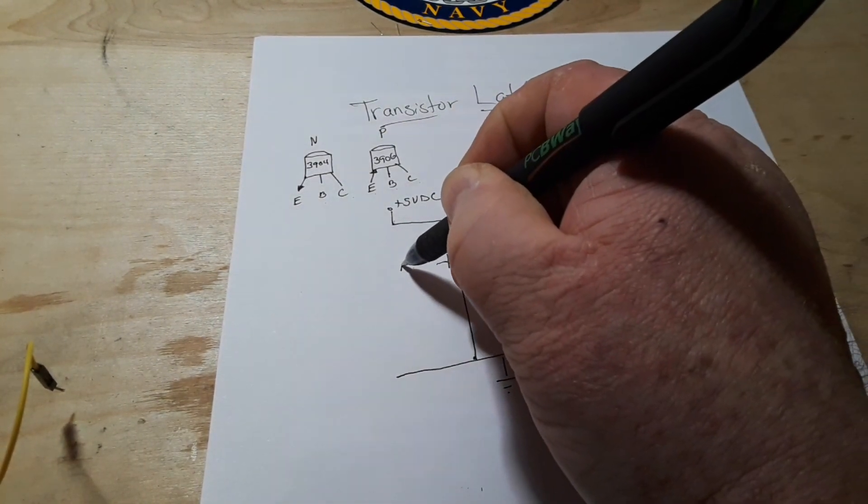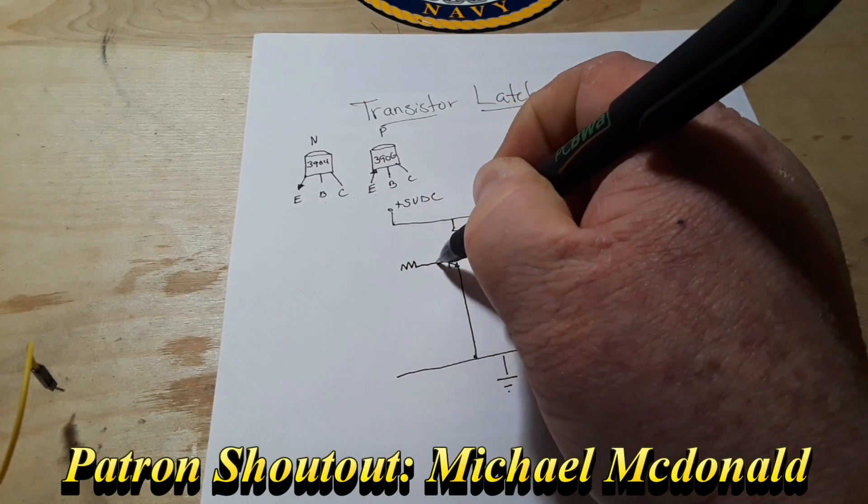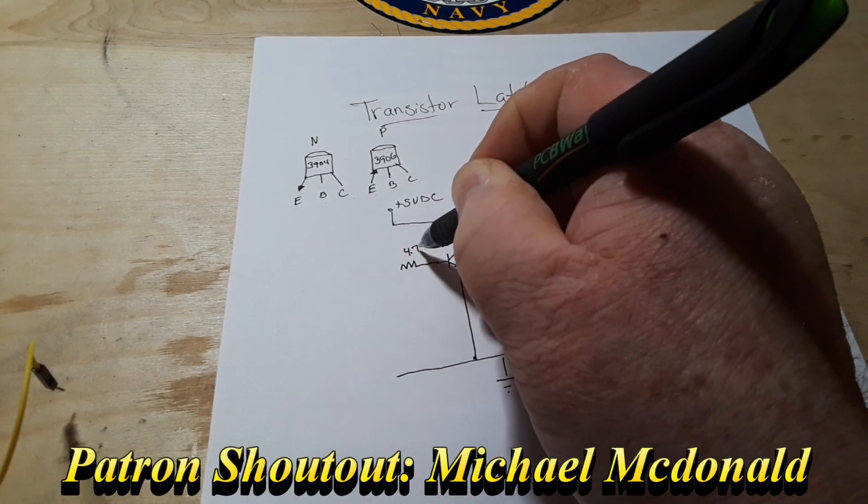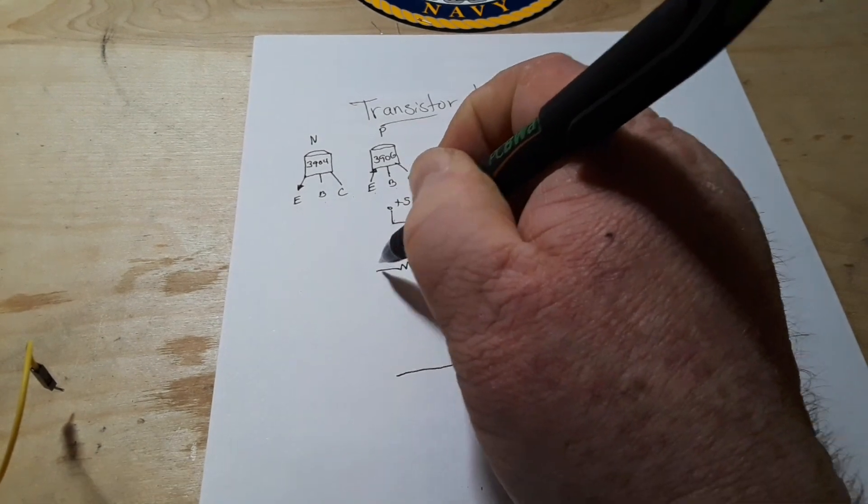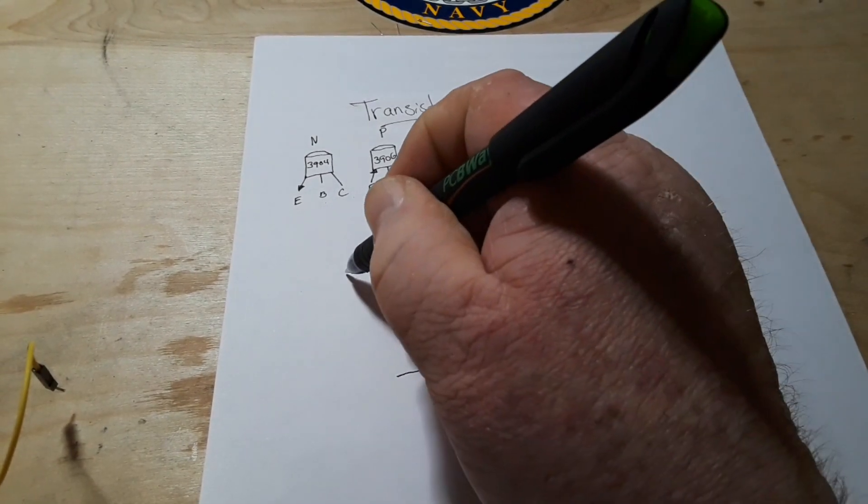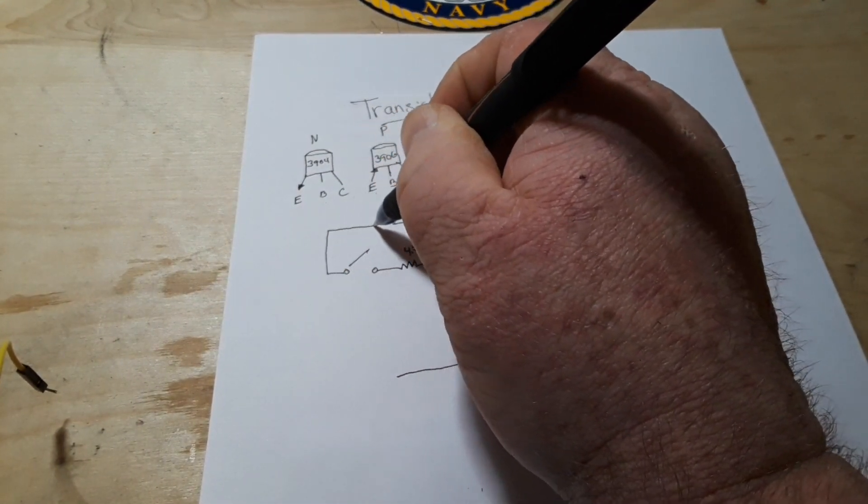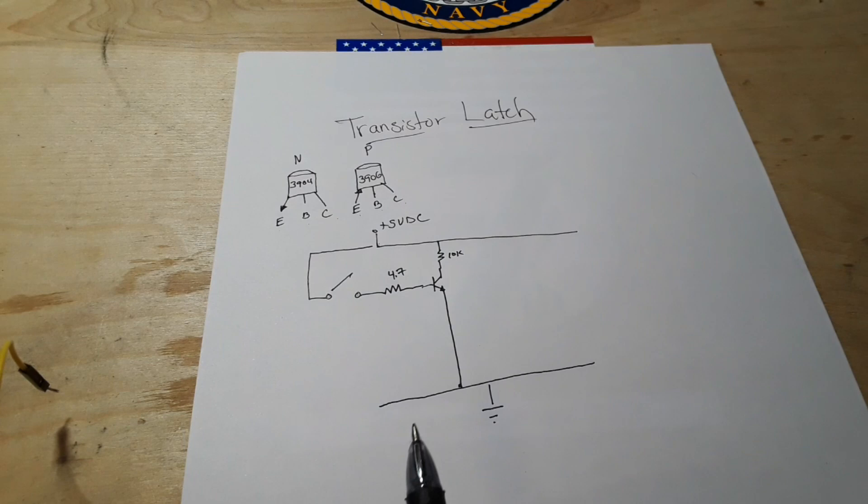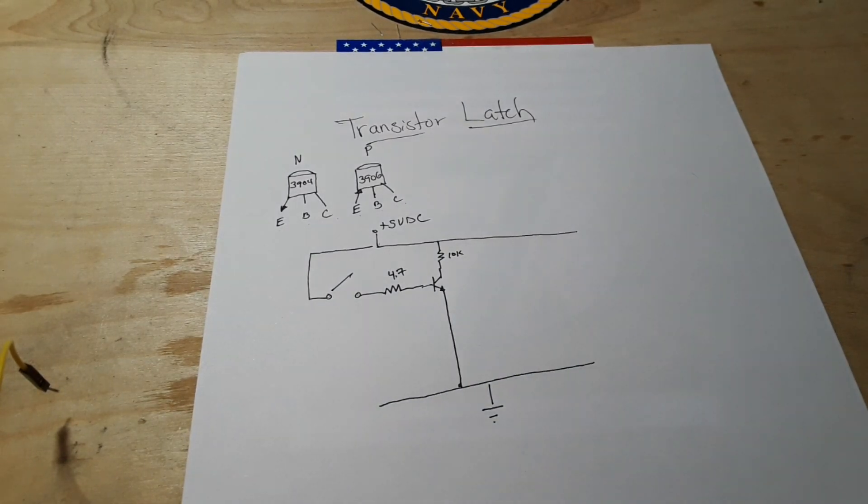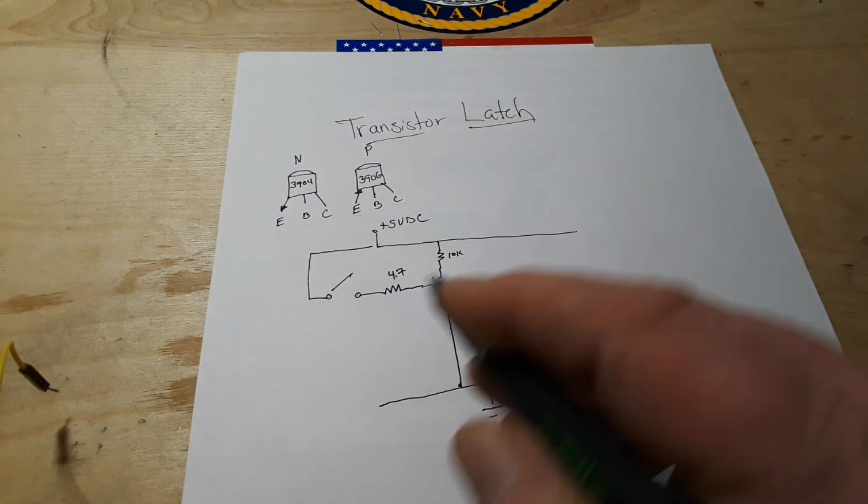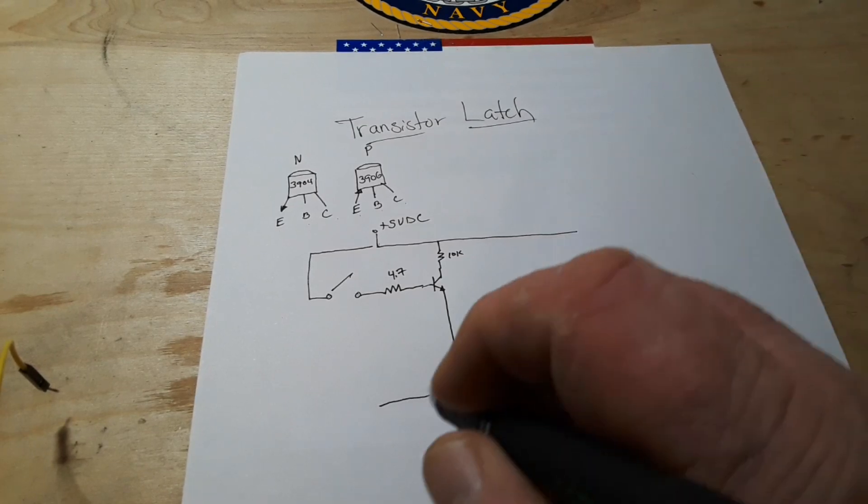Now we're going to use a 4.7k ohm resistor here on our switch just to give us a little buffer on that base so we don't jam it open too hard. Now that's side one.